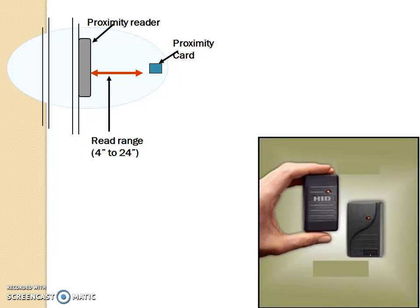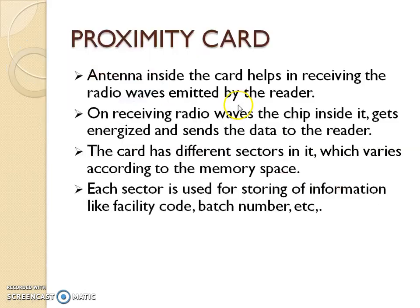When the card comes within this 2-foot range, the interaction happens between the card and the reader. In a proximity card, there will be an antenna inside the card which helps in receiving the radio waves emitted by the reader fixed on the wall. On receiving the radio waves, the chip inside gets energized and sends back the data to the reader. This is called the interaction between the reader and the card.